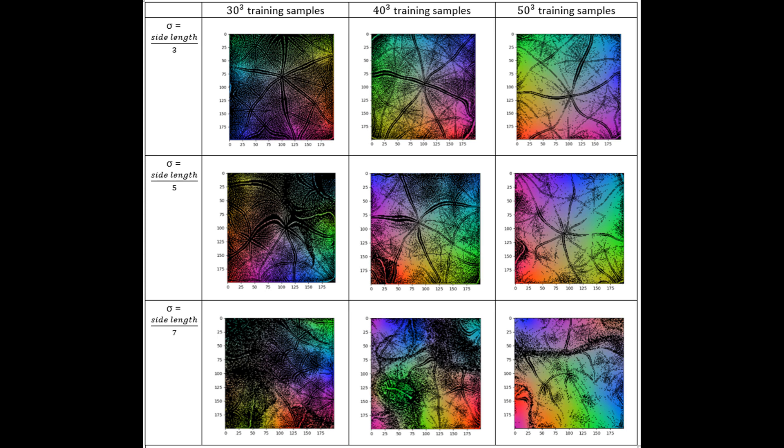Increasing sigma tends to create more organized hierarchical patterns, while decreasing it tends to create more disjointed patterns. Varying the number of training samples also exposes different sections of the patterns.